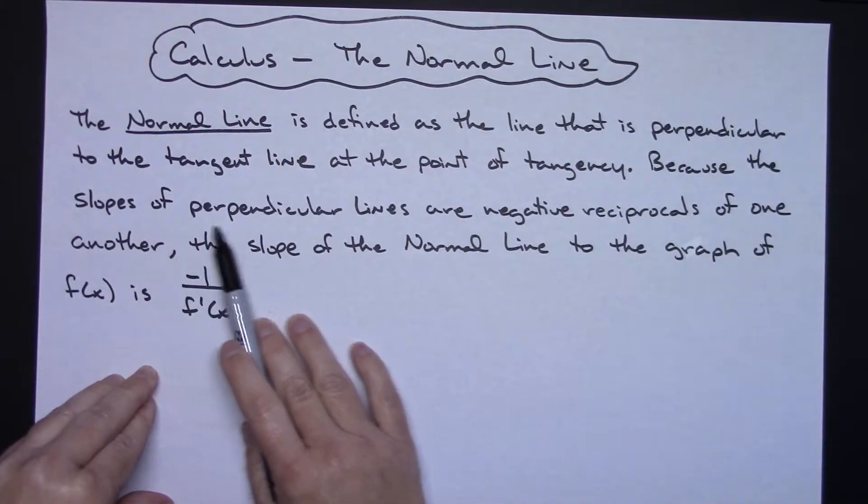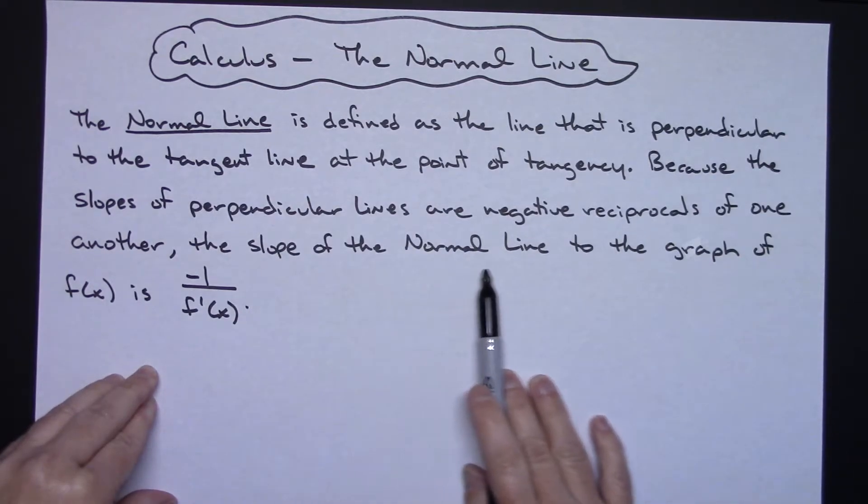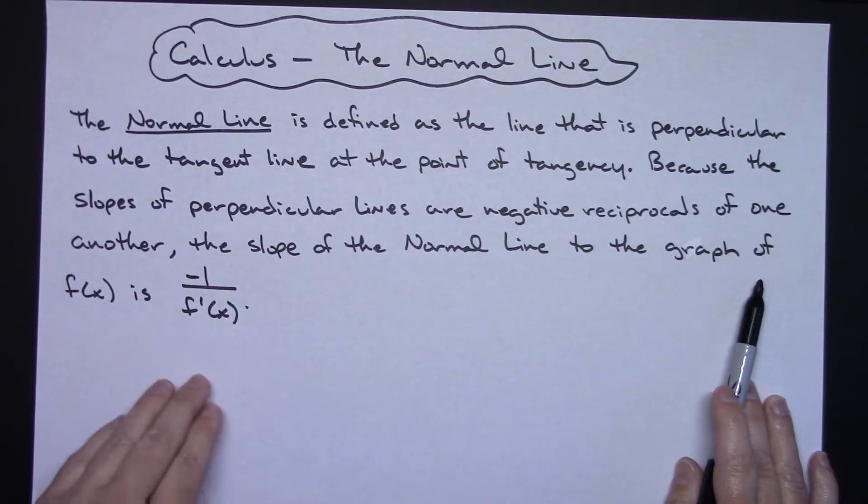Because the slopes of perpendicular lines are negative reciprocals of one another, the slope of the normal line to the graph of f(x) is -1/f'(x).